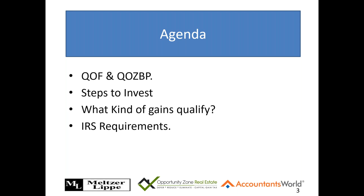This is a trap for the unwary, especially for people experienced with Section 1031 exchanges. In a 1031 exchange, you have 180 days to replace property, and that period begins the next day after the sale. For opportunity zones, the clock starts on the day of the gain itself — a subtle but important difference.